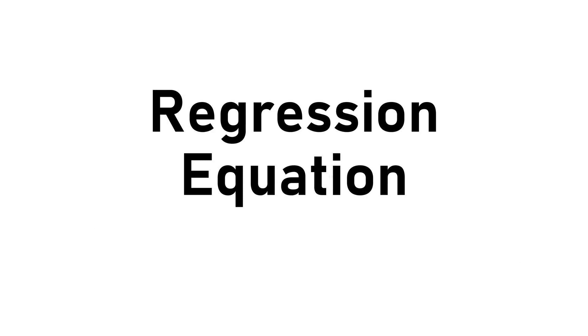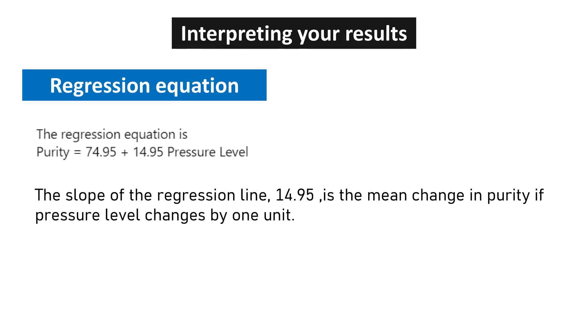The regression equation is a mathematical representation of the relationship between the variables under study. The slope of the regression line, 14.95, is the mean change in purity if pressure level changes by one unit.